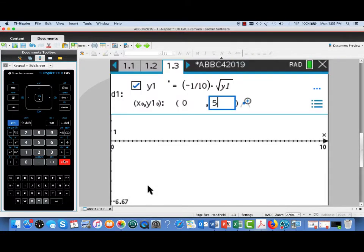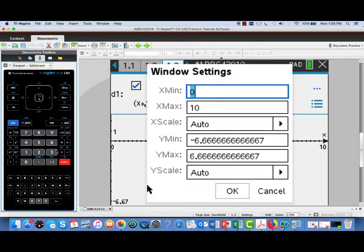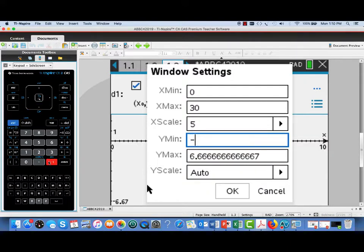Now, let me set up the window for this situation so it's more suitable for the physical situation we had in the problem. X min is the time minimum. Zero is fine on that. I'm going to set x max to 30. We'll set our increments on our scale to five. And for our y scale, let's just use negative ten and ten.